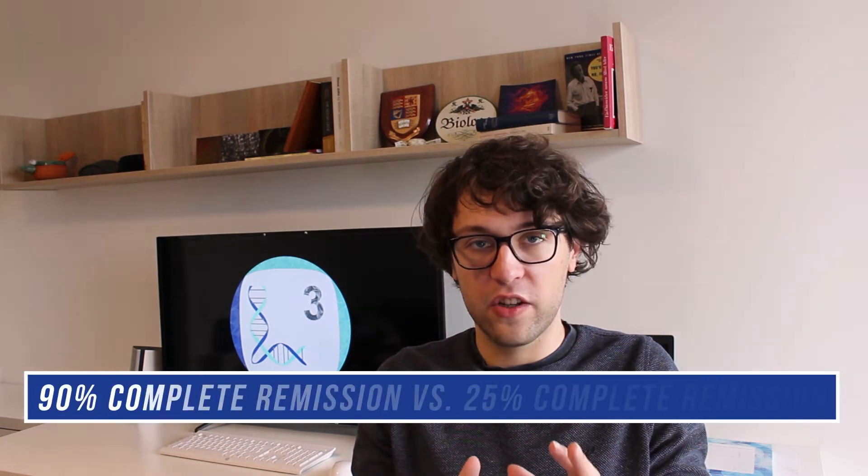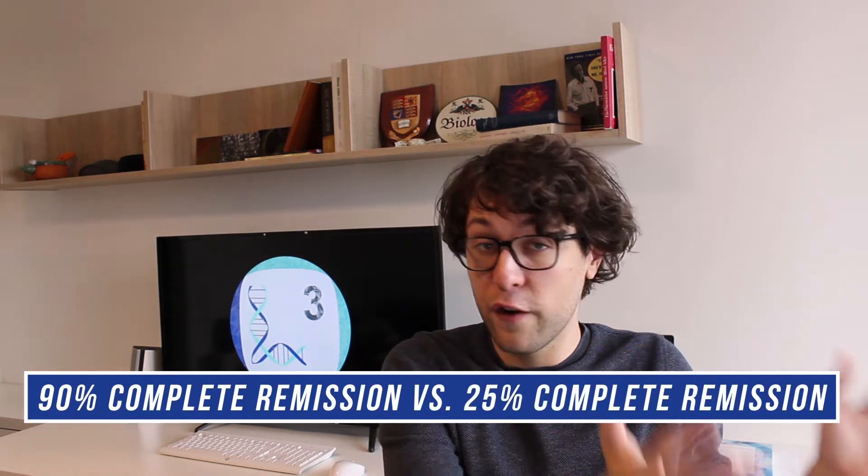Here CAR T-cells were designed to recognize CD19 which is abundant in B-cells. Since in these types of cancer cells are B-cells which abundantly expressed CD19, the treatment was very effective. In this study over 90% of patients showed complete remission. And to give you some context, normally only 25% of patients show complete remission using different other drugs.